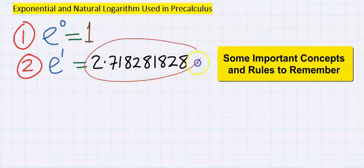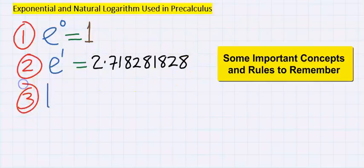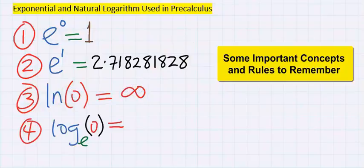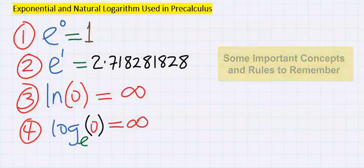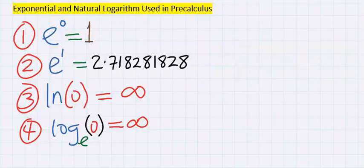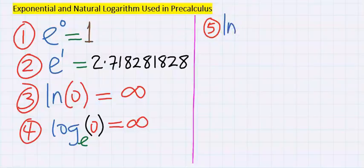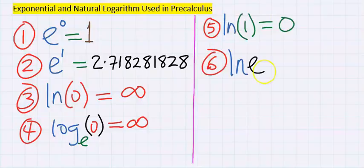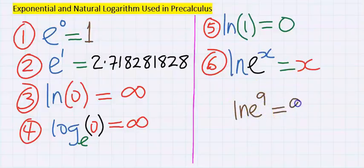Next, natural log of zero is undefined. Next, when written to base e, is still undefined—that is, it tends to infinity and does not exist. Next, ln(1) is equal to zero.